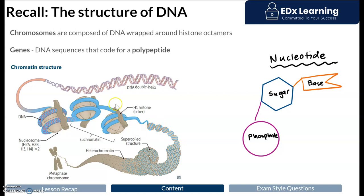A sequence of DNA that codes for a polypeptide is known as a gene. The basic repeating unit of DNA is a nucleotide, consisting of a repeating base, followed by a deoxyribose sugar, followed by a phosphate. If you think of this like a ladder, the base is the rung of the ladder, and the backbone of the ladder is a sugar-phosphate complex.